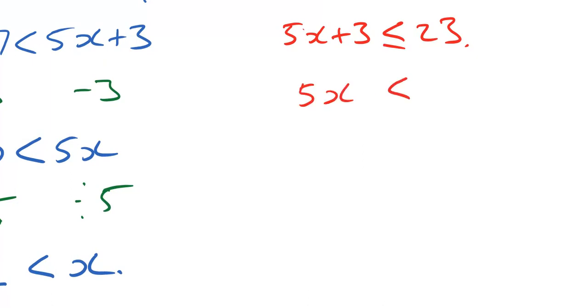Five X less than or equal to 20. What I've done there is I've taken three again from both sides. Next thing I'm going to do, I'm going to divide by five. If I divide both sides by five, I'll have X is less than or equal to four.